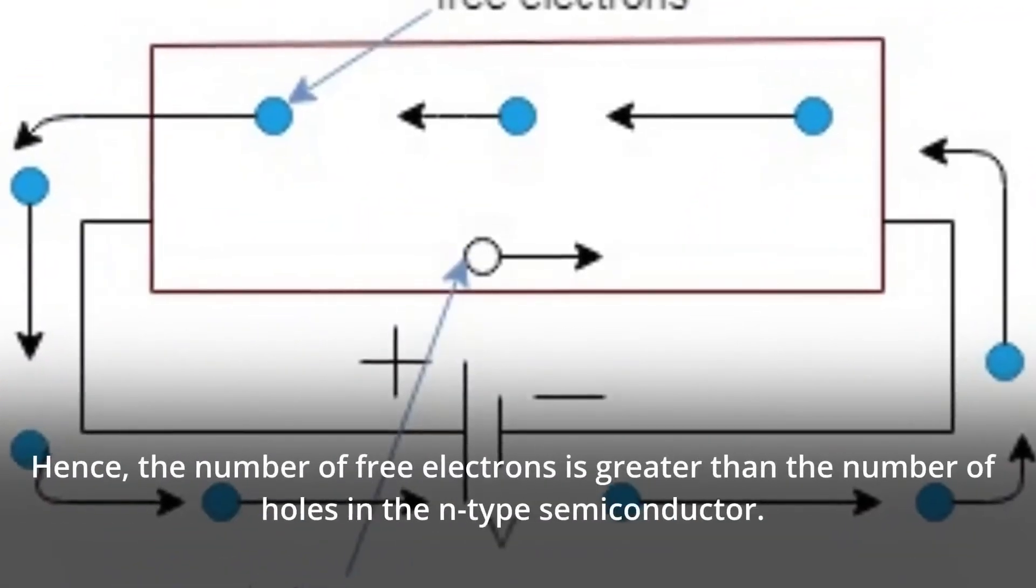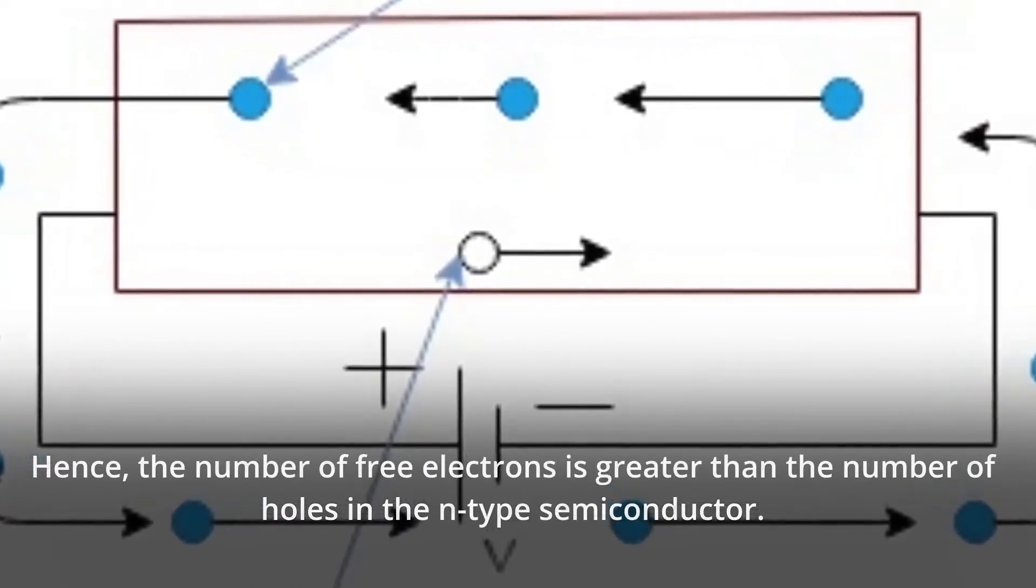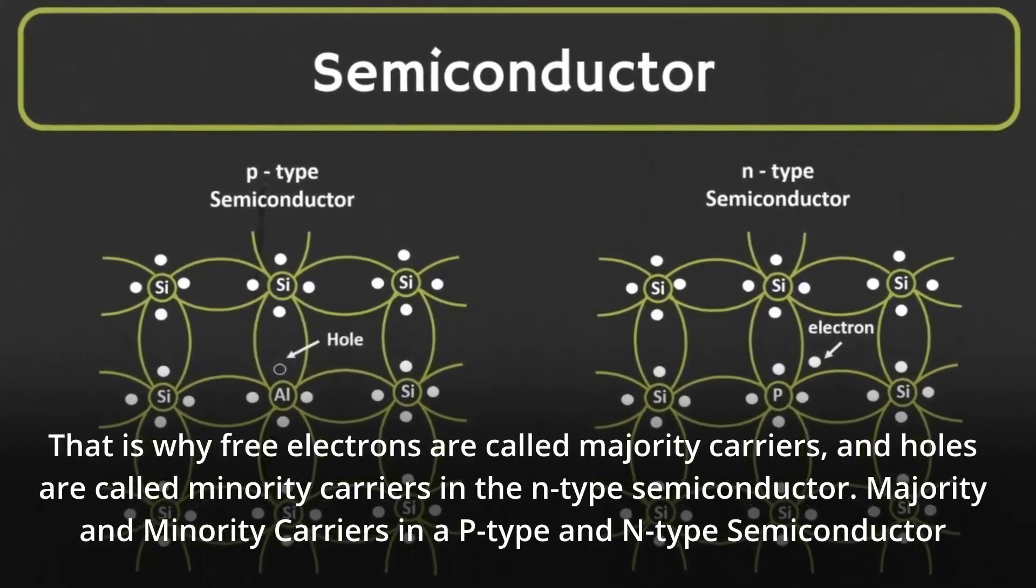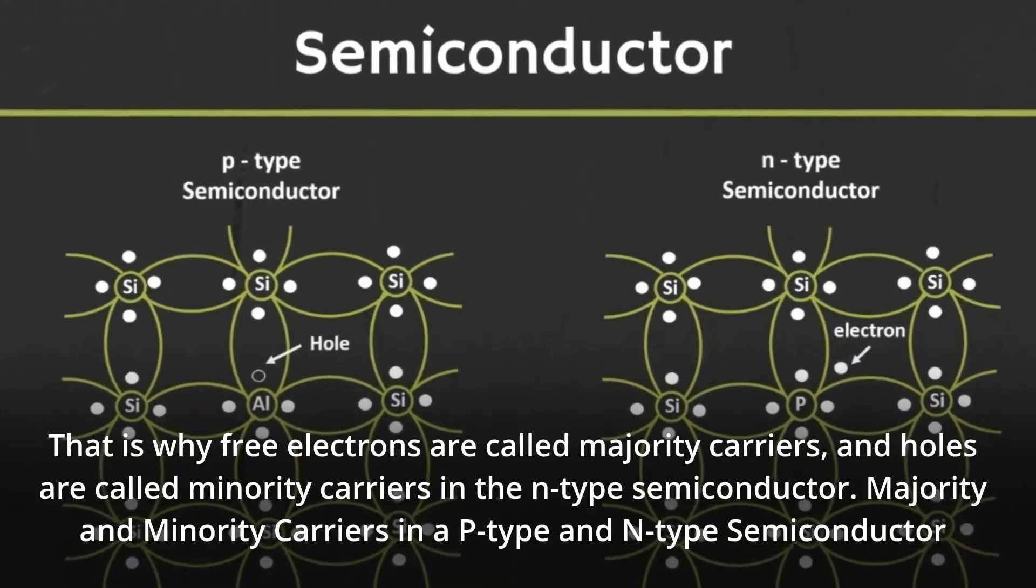Hence, the number of free electrons is greater than the number of holes in the N-Type Semiconductor. That is why free electrons are called majority carriers, and holes are called minority carriers in the N-Type Semiconductor.